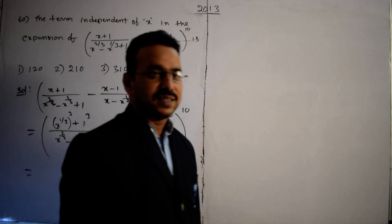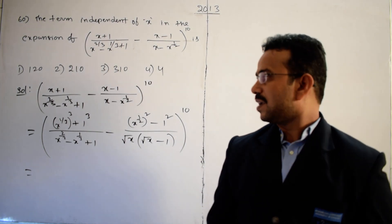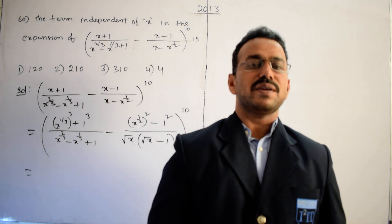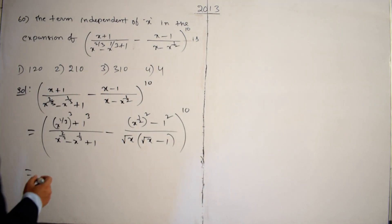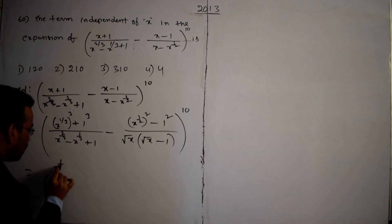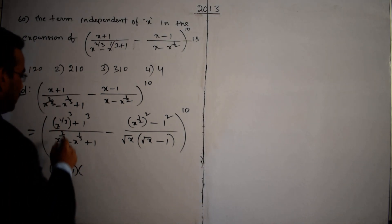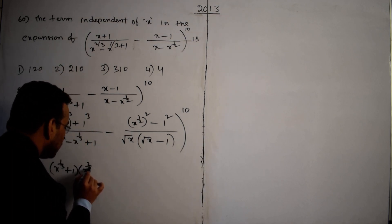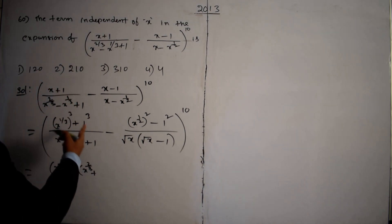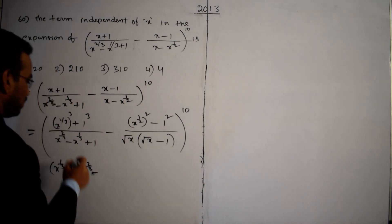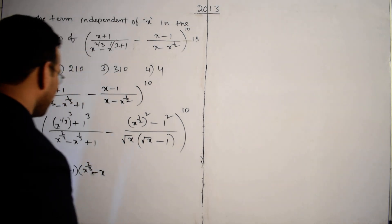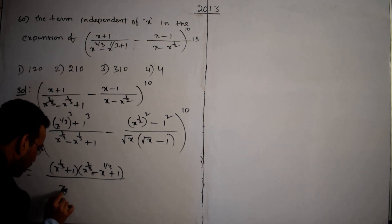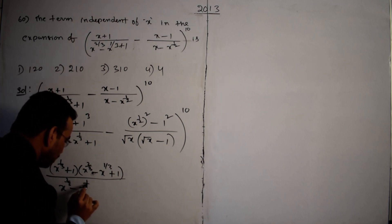In the numerator of the first term there is an a³ + b³ form. The formula is a³ + b³ = (a + b)(a² - ab + b²). Applying this formula here: a = x^(1/3) and b = 1, so we get (x^(1/3) + 1)(x^(2/3) - x^(1/3) + 1) in the numerator.